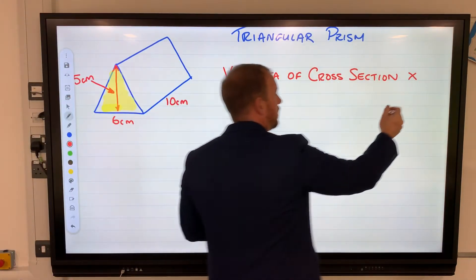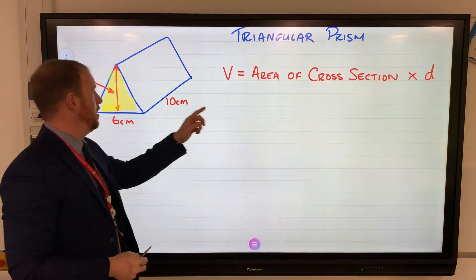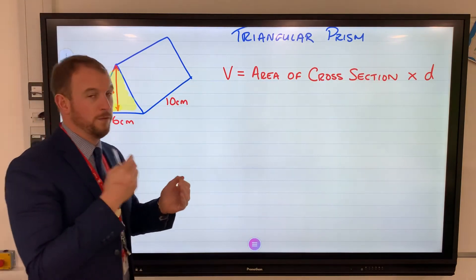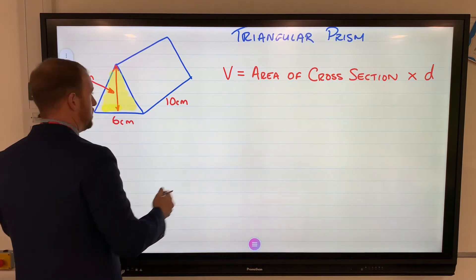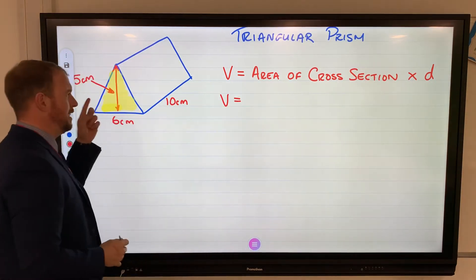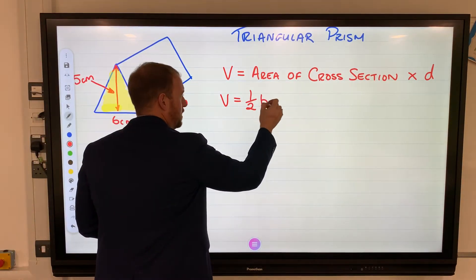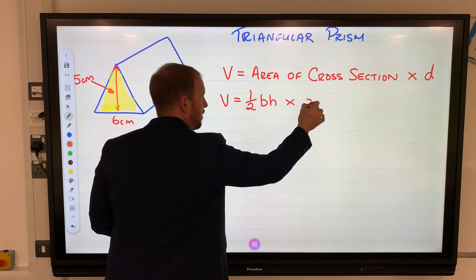It's that area of cross section, so you've got to be familiar with your formulas for the area of these shapes. Volume equals area of the cross section - the triangle - it's a triangle: half of the base times the height, and then times that by the depth.